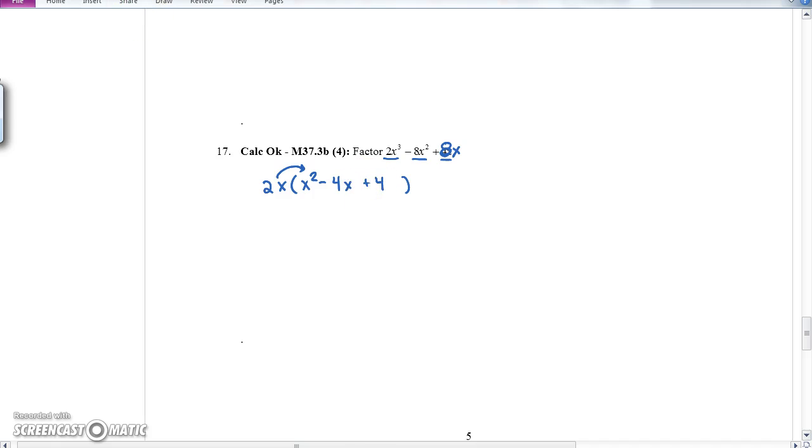And now as we think about this, is there something that multiplies to positive 4 and adds to negative 4? Well, as I think about that, negative 2 times negative 2 equals 4, and negative 2 plus negative 2 equals negative 4.